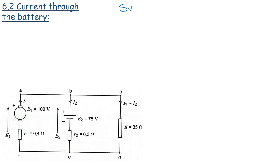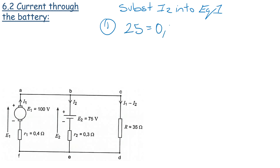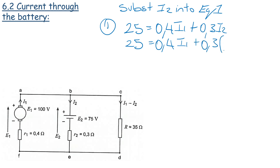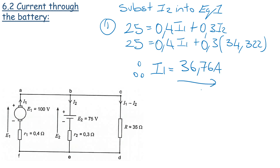Now that we have I2, we substitute it into equation 1 to calculate I1. Equation 1 was: 25 = 0.4·I1 + 0.3·I2. Substituting I2 = 34.322: 0.4·I1 + 0.3 × 34.322. Solving gives us I1 = 36.76 amps.